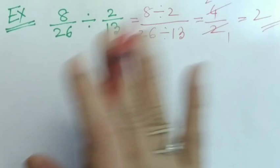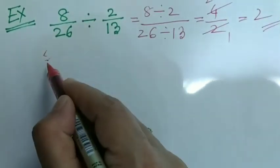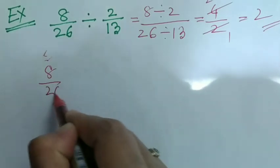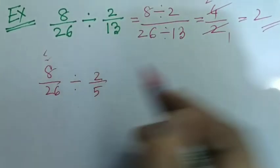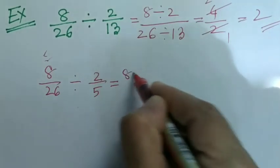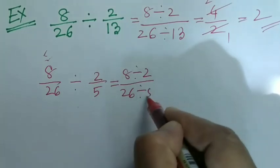However, this does not work out for other combinations. Suppose if it's like 8 divided by 26 divided by 2 divided by 5. Now, if we do like this, this is equal to 8 divided by 2 divided by 26 divided by 5.